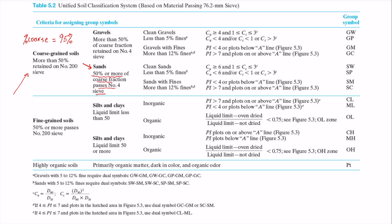And then the percent of fines is 5%. But if you look at these two conditions, one is less than 5%, one is more than 12%. So that 5% is actually a special case. If you look at this footnote B here, you'll notice that for sands with 5% to 12% fines, it's a dual symbol case. And in our example, we have percent of fine is 5%, so we know it's a dual symbol case.